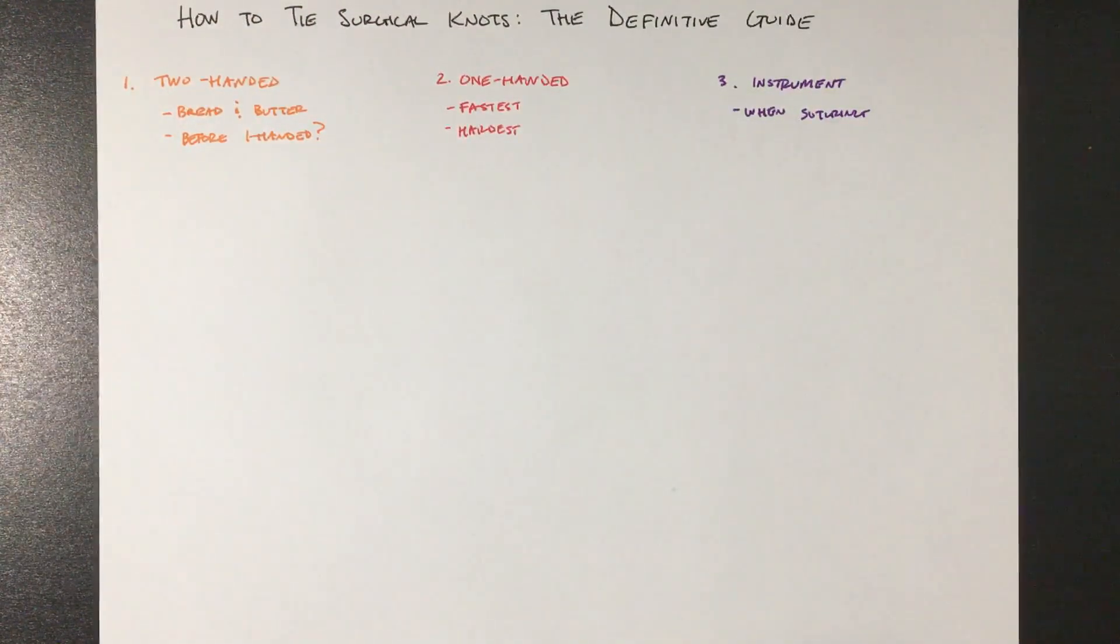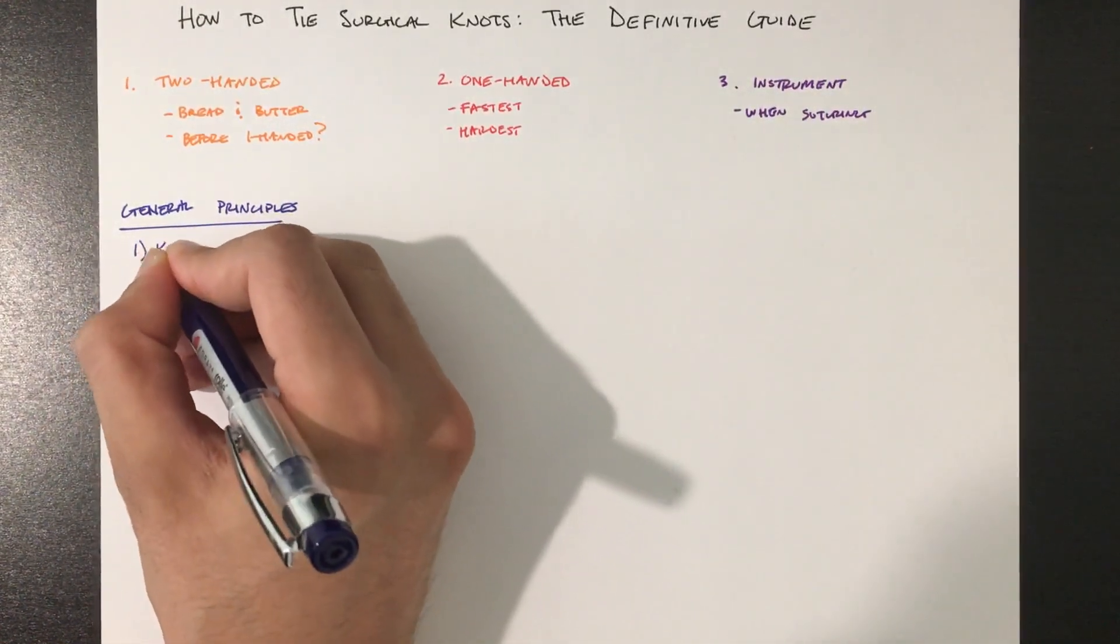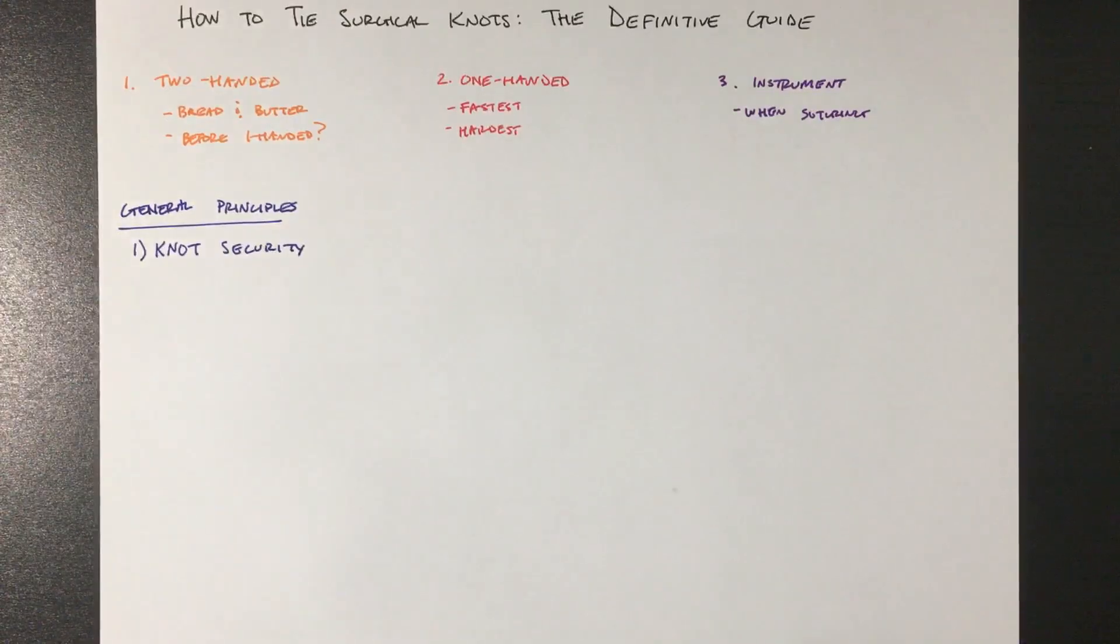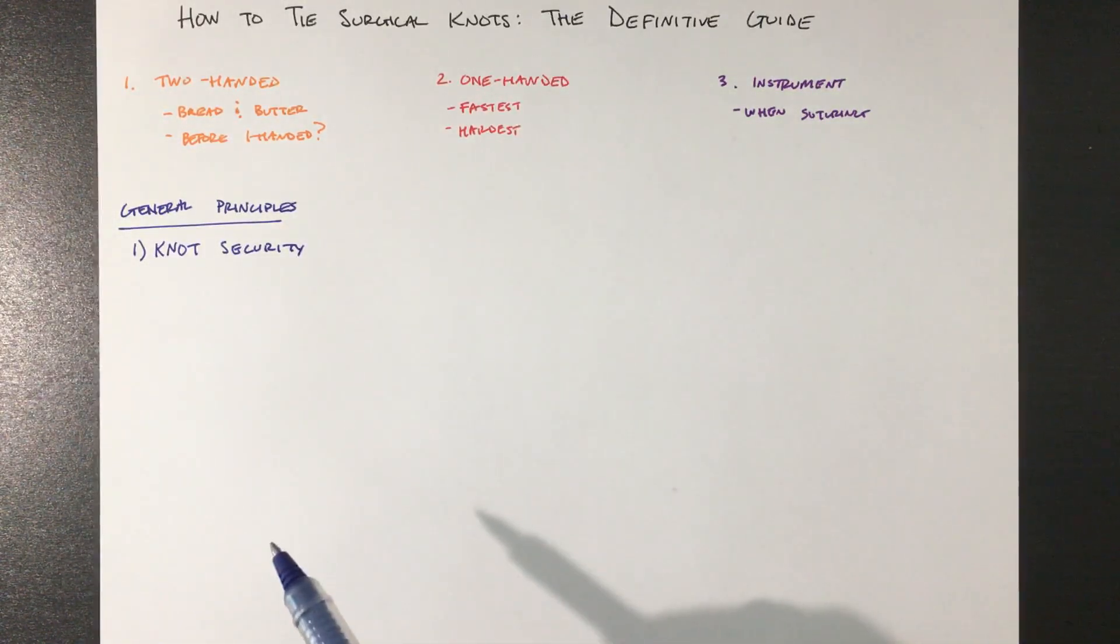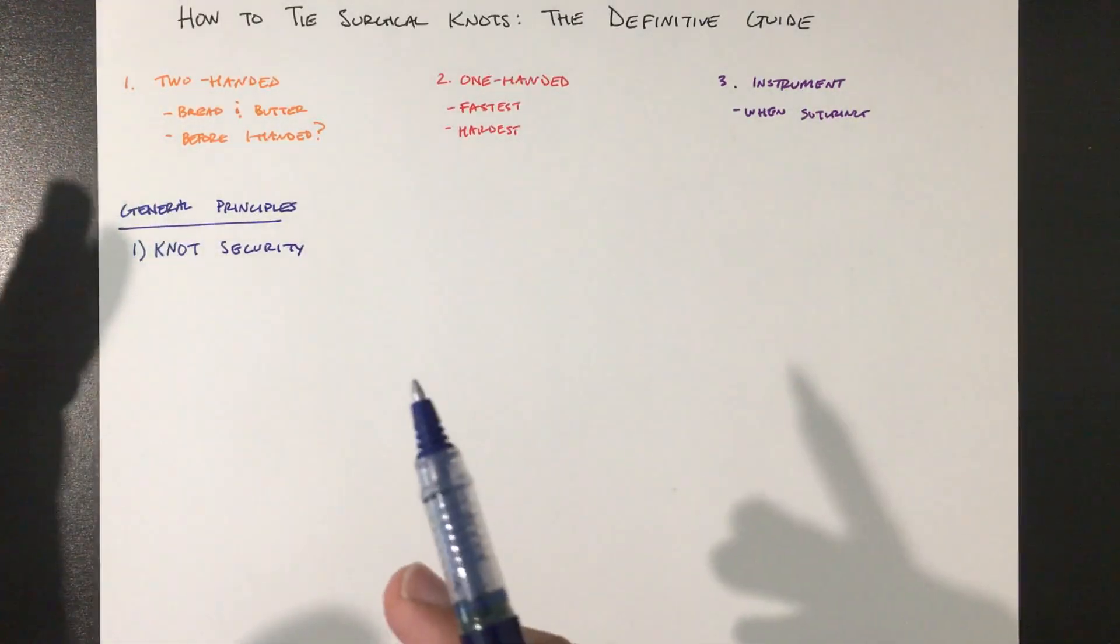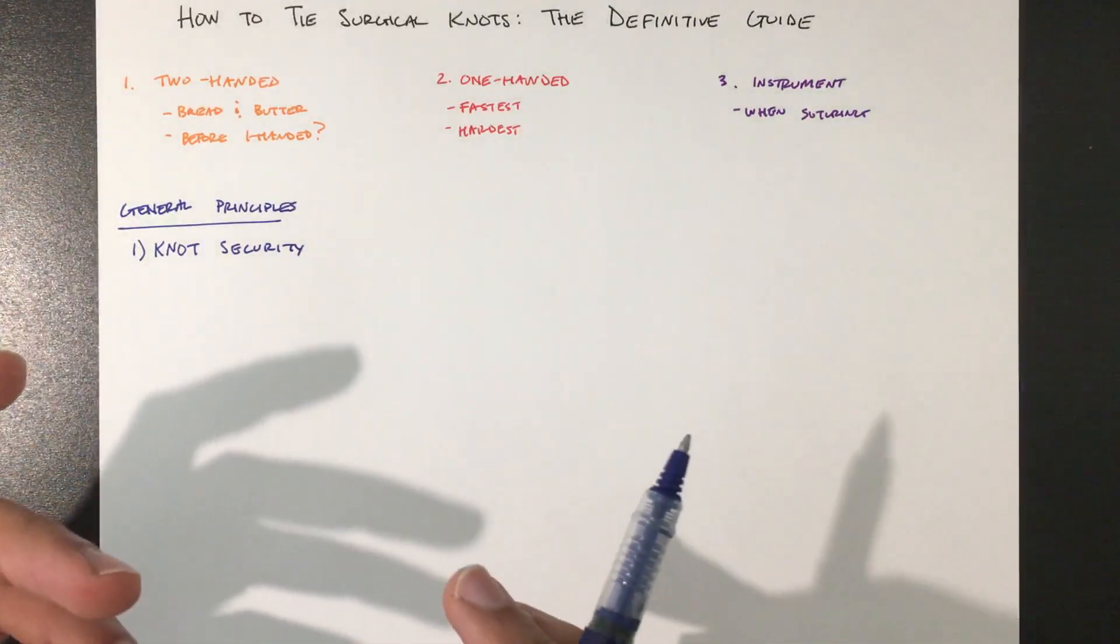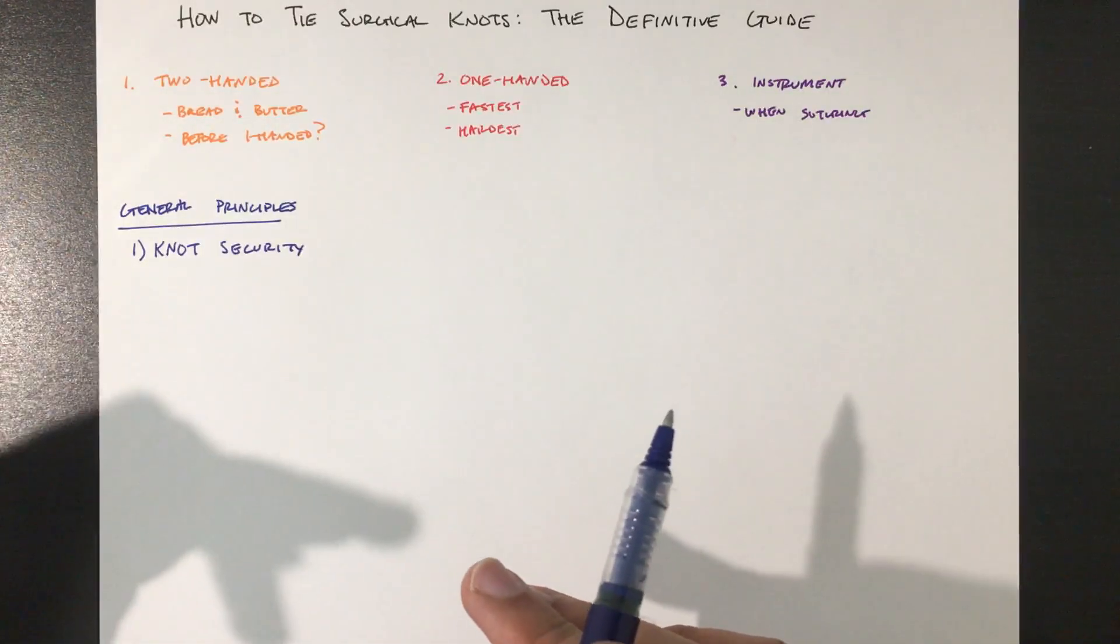Okay, on to a few general principles. The first is knot security. Without getting into the theoretical details of stretch and friction, what you need to know is that proper technique is the most important factor for having secure knots. Throw solid square knots. Also, more throws will lead to better knot security, but it's a balance because you don't want to be throwing too many knots. Having excess suture under the skin just increases the risk for inflammation and possibly infection.